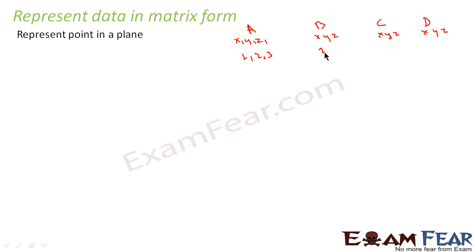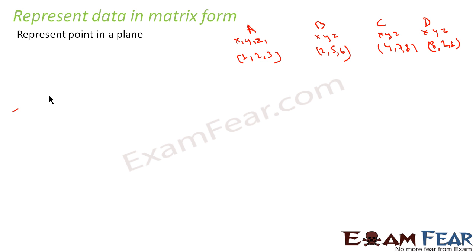Point B is 2, 5, 6. Point C is 4, 7, 8. And point D is, let's suppose, 8, 2, 5 — anything I can take. These are the 4 points we have. Now I can represent this data in matrix form with X, Y, Z columns and the points as rows.